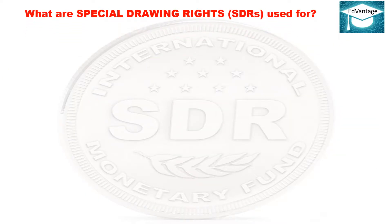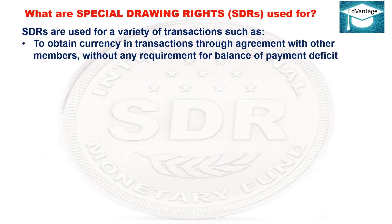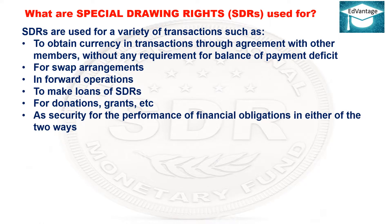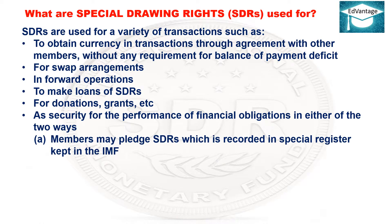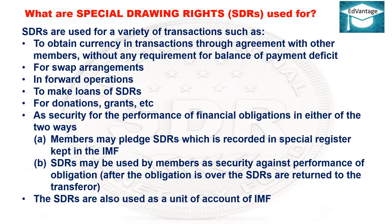What are SDRs used for? SDRs are used for: obtaining currency in transactions through agreement with other members without any requirement for balance of payment deficit, swap arrangements, forward operations, making loans of SDRs, donations and grants, and as security for performance of financial obligations — members may pledge SDRs recorded in a special register kept at the IMF. After the obligation is over, SDRs are returned to the transferor. SDRs are also used as a unit of account of the IMF.